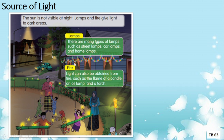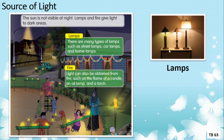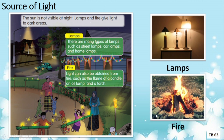The third source of light is fire. Light can also be obtained from fire, such as the flame of a candle, an oil lamp, and a torch. Selain daripada lampu dan matahari, we can also obtain light from a candle — lilin, an oil lamp — pelita, and a torch — obor. So what are the three sources of light? The sun, lamps, and fire.